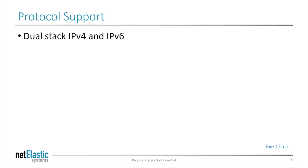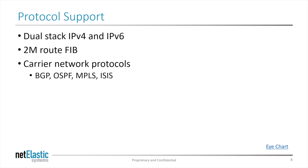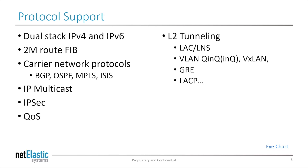The Netelastic V-Router is a dual-stack router supporting both IPv4 and IPv6. It has a 2 million route FIB, so it'll keep multiple copies of the Internet table. It supports all the popular carrier network protocols: BGP, OSPF, etc. It supports IP multicast, IPsec, and quality of service. On the ingress side, it does Layer 2 tunneling including VXLAN and VLANs — even double-tag and triple-tag VLANs — GRE, LACP, etc.